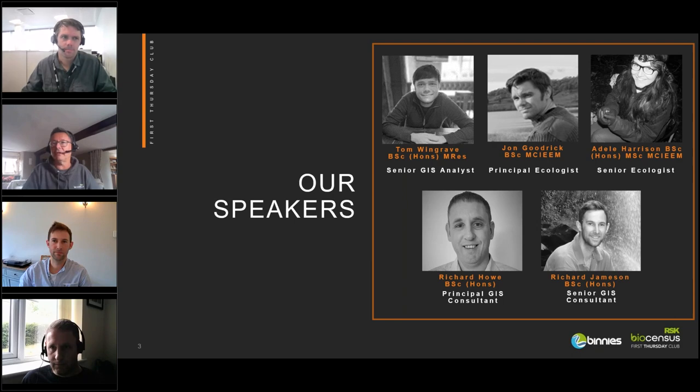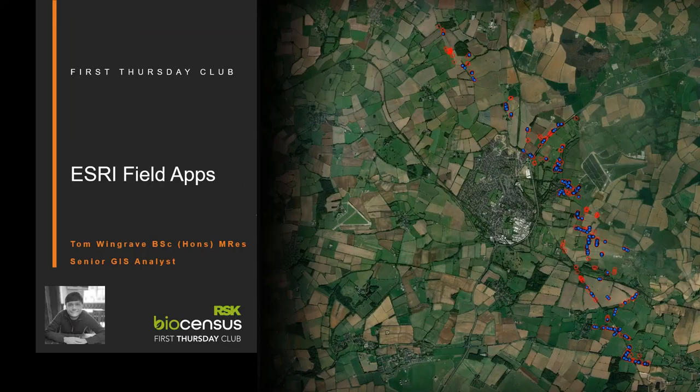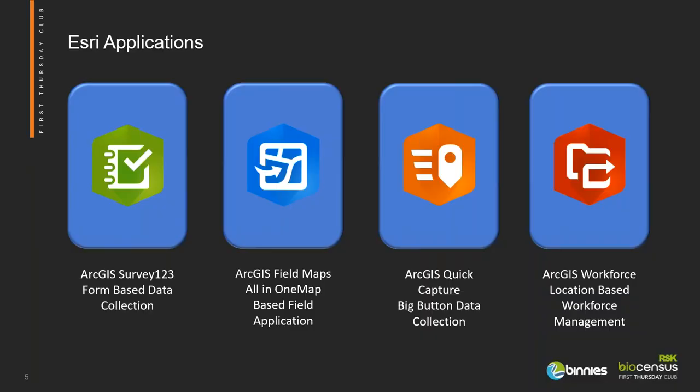If everyone could turn their cameras off that will be fab. Over to you Tom. So hello, Tom here, and I'm going to very briefly run through the ESRI GIS field apps that we use here at Binnies and Bioscensus. I could speak for about 30 minutes on each one of these applications individually but I'll try my best to offer a brief overview of each app and its potential uses. Today I'll be covering Survey123 which offers form-based data collection, ArcGIS Field Maps which is ESRI's all-in-one map-based field application, QuickCapture which offers big-button data collection, and then Workforce which allows location-based workforce management.